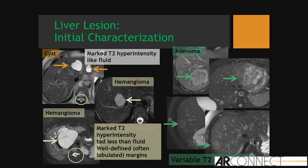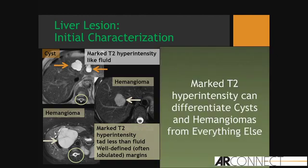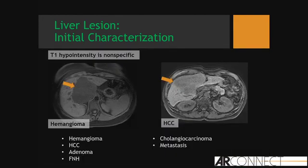It could be an adenoma. It could be hepatocellular carcinoma. It could be metastasis. It could be focal nodular hyperplasia. I can't tell you what this lesion is based on the T2 characteristics alone, unless it's markedly hyperintense, in which case I can feel comfortable saying it's a cyst. Beyond marked T2 hyperintensity, I cannot characterize lesions based on T2-weighted information alone.